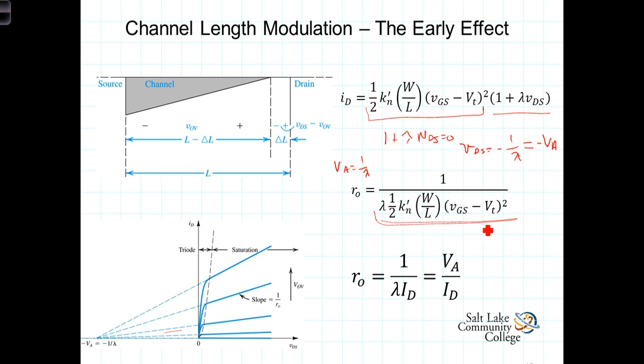Now, if we replace this current term with the expression I-sub-D, we then get that R-sub-0, the effective output resistance of the field effect transistor, is equal to 1 over lambda times I-sub-D. Or recognizing our definition of V-sub-A, we can also say that the output resistance is equal to V-sub-A, the early voltage, divided by the constant current in saturation, or the saturation current that's constant when we don't take the channel-length modulation into effect.